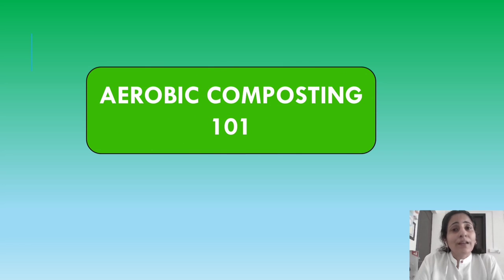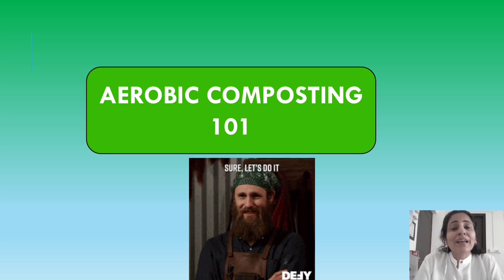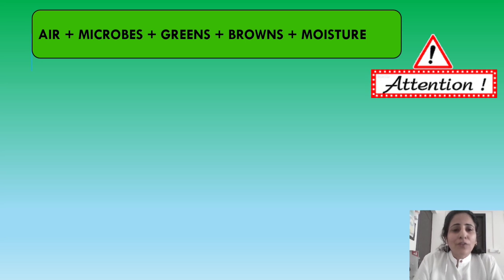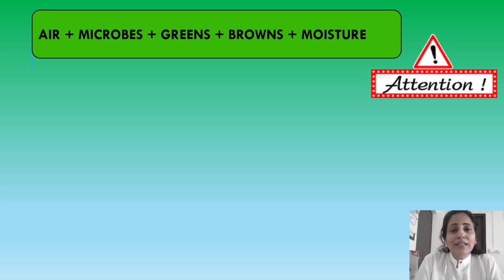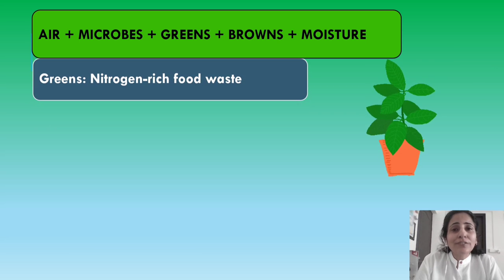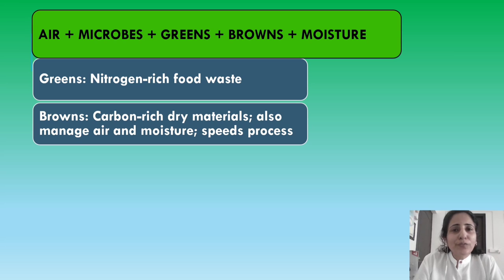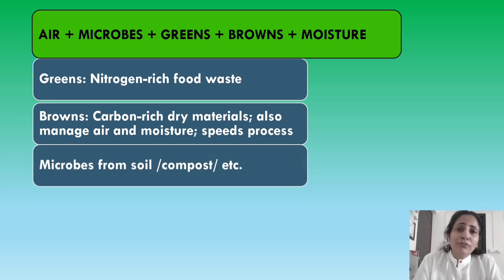Starting with aerobic composting — what do we need? These five things: air is obvious since it is aerobic composting and aerobic bacteria are working, so we need microbes. We also need the greens, the browns, and moisture, which act as the substrate for these microbes. Greens are the nitrogen-rich food waste. Browns are the carbon-rich dry materials which not only feed the microbes but also manage the air and moisture and speed up the process. Microbes can be introduced from existing soil, previously made compost, commercial products, or even buttermilk.